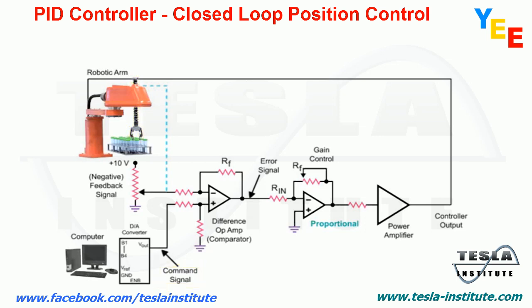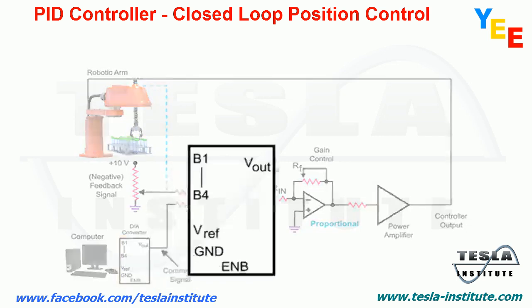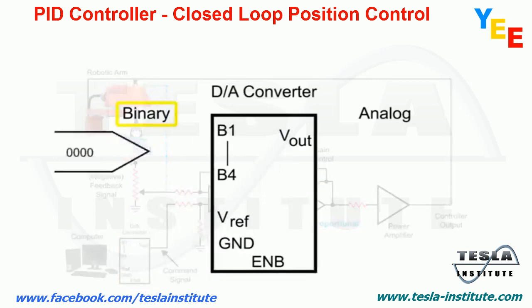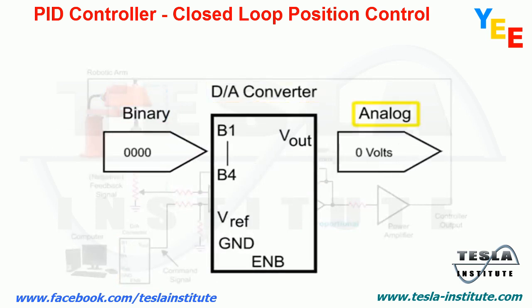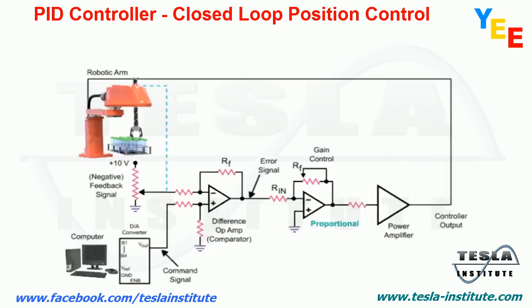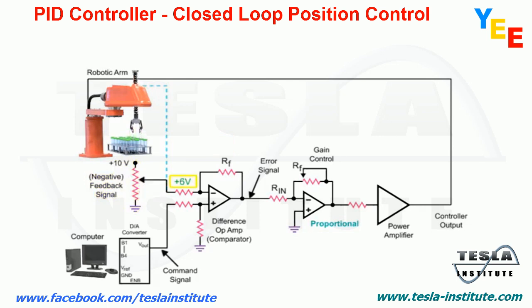The analog command signal voltage produced by the digital-to-analog converter determines the position of the arm. The potentiometer attached to the robotic arm in the circuit indicates the actual position. The variable voltage produced is referred to as the feedback signal.